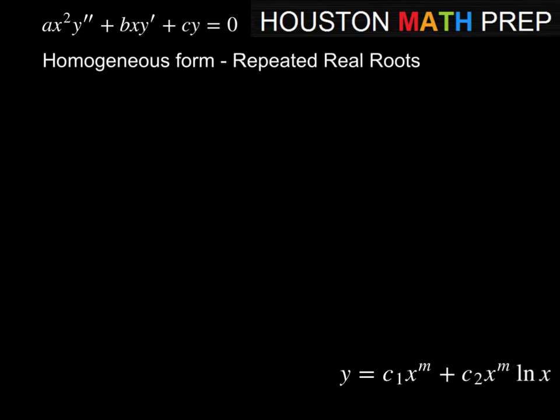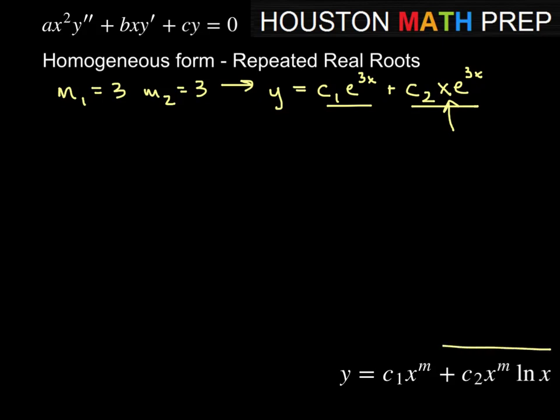For the repeated real roots case, remember when we had the basic second order equation, whenever we had repeated roots, let's say m1 equals 3 and m2 also equals 3, we needed these to be linearly independent. We had some multiple of e to the 3x, and then so we didn't have a repeat e to the 3x, we had x times e to the 3x, which made neither of these functions multiples of one another. That's how we solved the linear independence issue, by multiplying in a factor of x. When we have repeated real roots in the Cauchy-Euler situation, we're going to multiply in a factor of lnx to create the linear independence for the terms.